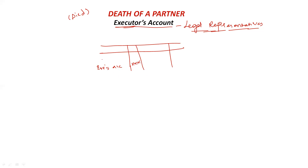If you know how to prepare the deceased partner's capital account, then you will know this. Basically it is the balancing figure from the deceased partner's capital account, and it means we have to give all this amount to the legal representatives of the deceased partner — the firm has to pay this amount to them.